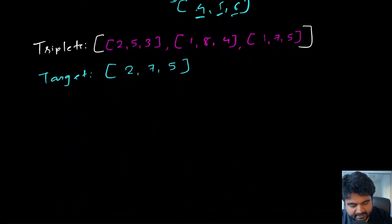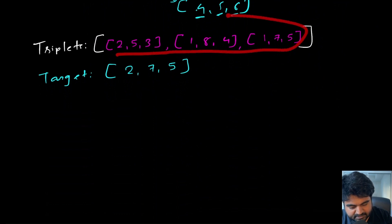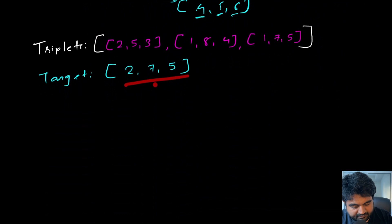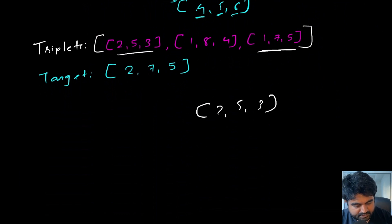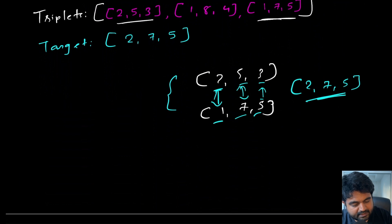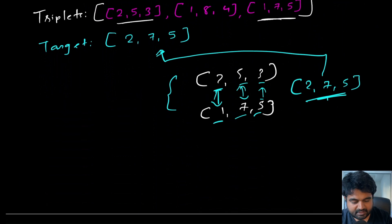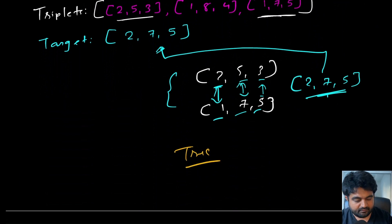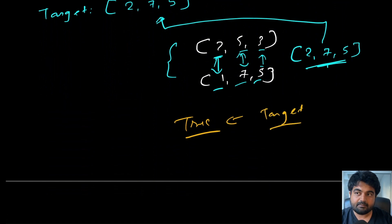In this example, we have three triplets and our target is (2, 7, 5). We have the option to do the merge operation between any two triplets. Let's merge (2, 5, 3) and (1, 7, 5). Taking the maximum at each position: max(2,1)=2, max(5,7)=7, max(3,5)=5 — giving us (2, 7, 5). This exactly matches the target, so we return true, confirming we can generate the target by merging two of the given triplets.